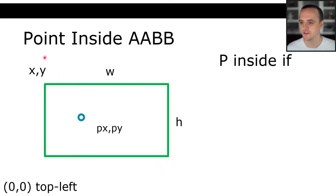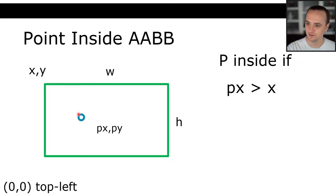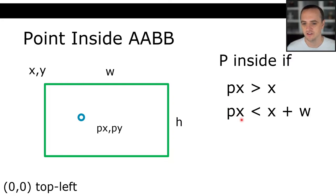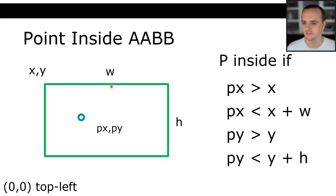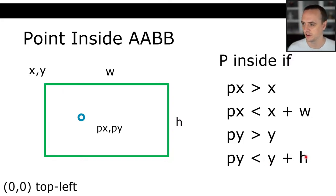If we're instead representing the rectangle by a point and a size, we still need px greater than x. But now the right-hand side is x plus width instead of x2, and the bottom is y plus height instead of y2. That is point inside axis-aligned bounding box — very simple.